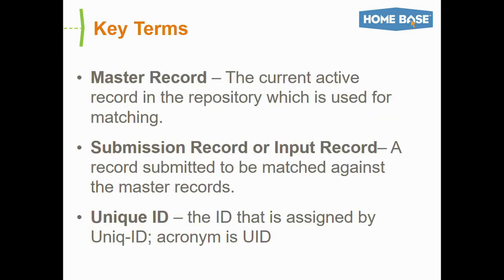A few key terms to keep in mind: the master record is the current active record inside the UID database which is used for matching purposes. The submission or input record is the record that's actually submitted by the user via a service such as PowerSchool to UID. And the unique ID is the ID that's assigned by the system — we call it the UID.